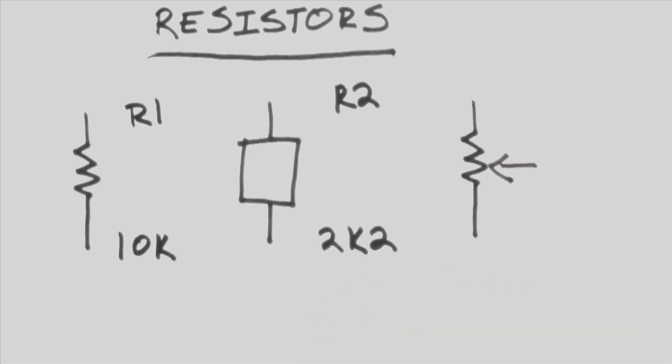Sometimes, instead of a decimal point, the K will be placed between the two letters. So, for example, 2K2 means 2.2 kilo-ohms.